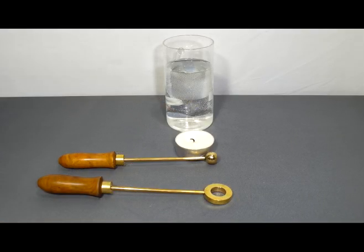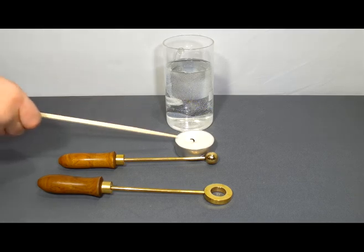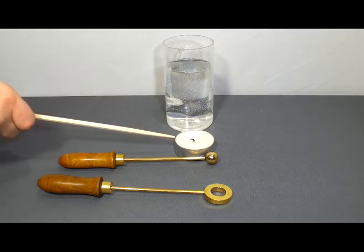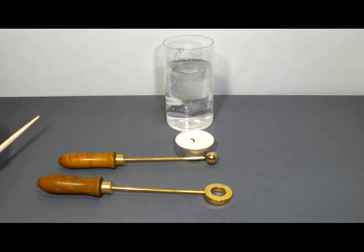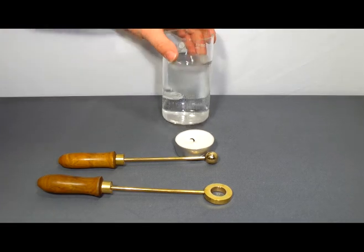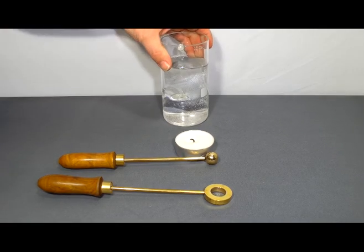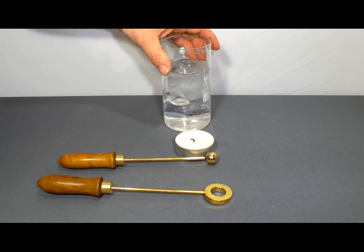For the experiment for the ball and ring apparatus you need a heat source. In this case I'm simply using a candle but a Bunsen burner does work best. Whenever you deal with open flame and heat, always have water or something around in case something goes wrong and it needs to be cooled down quickly.